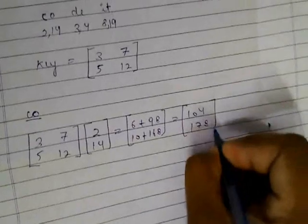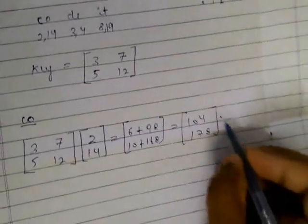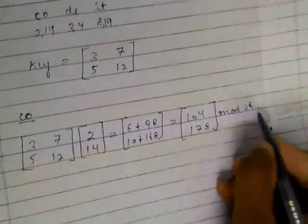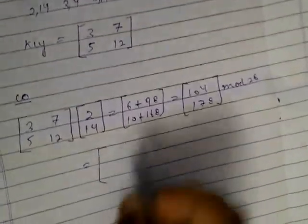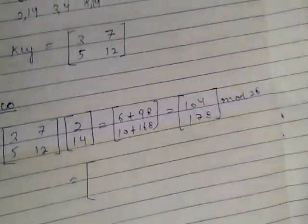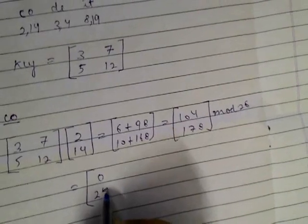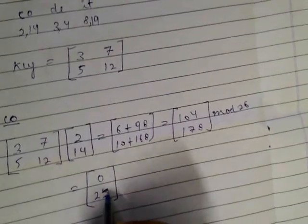Now what we do: we take mod of this, mod 26. After taking mod, we get the values 0 and 22. In matrix form, we will write it like this.